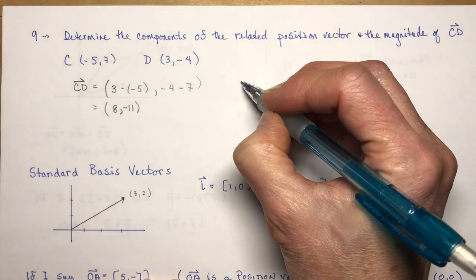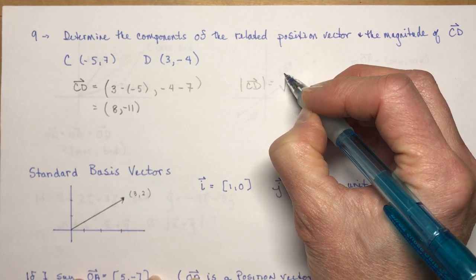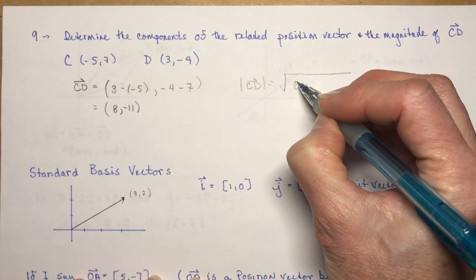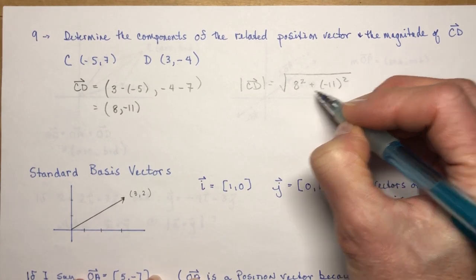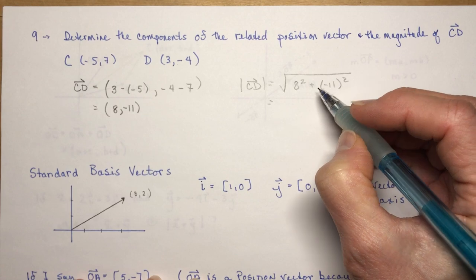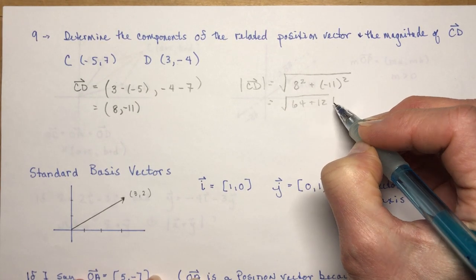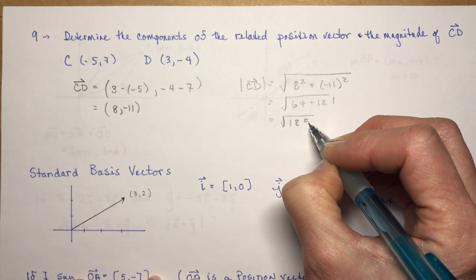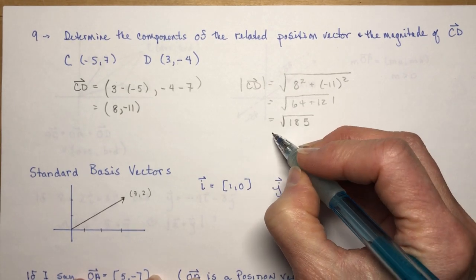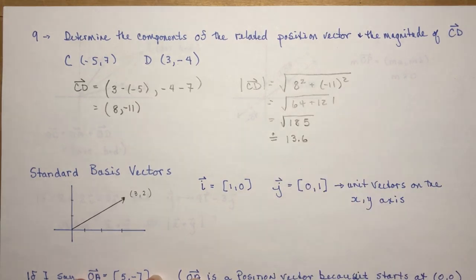Now, if I want to find the magnitude of that, very simple. Nice, easy work for you. So all I have to do is the square root of the sum of the squares of the coordinates. So that's 64 and 121. And that's going to be the square root of 185, which you might have to approximate here. So it's approximately 13.6. So that would be the magnitude.